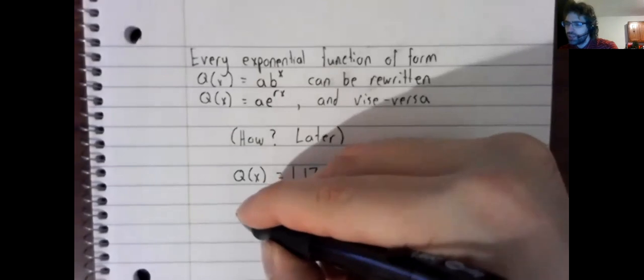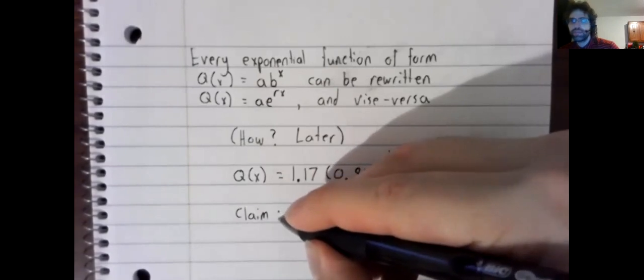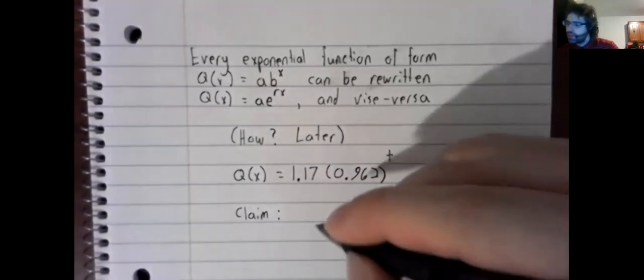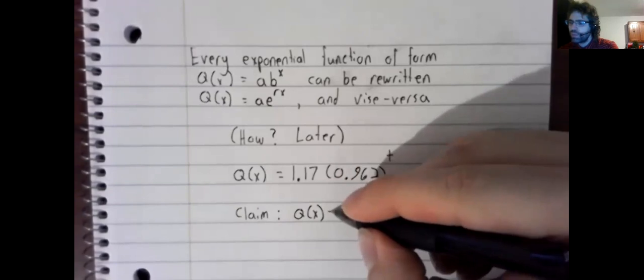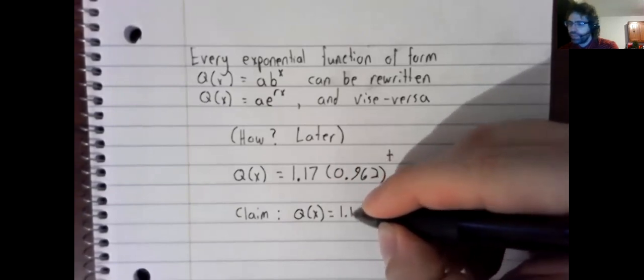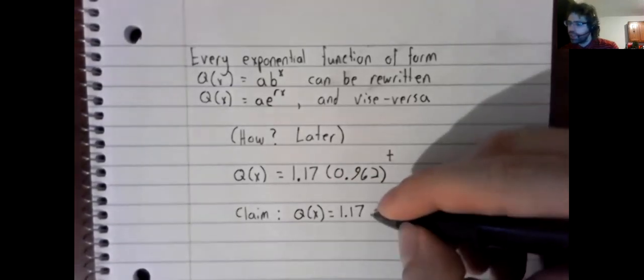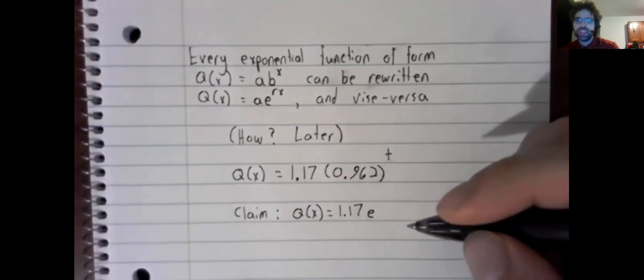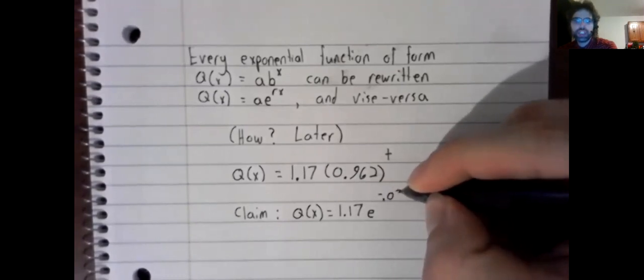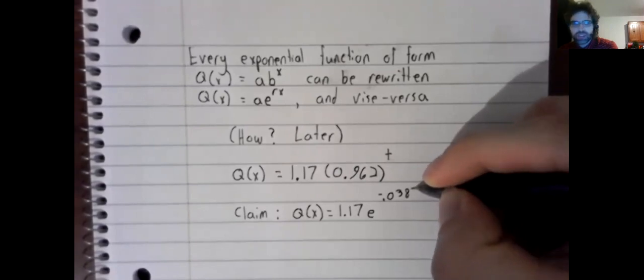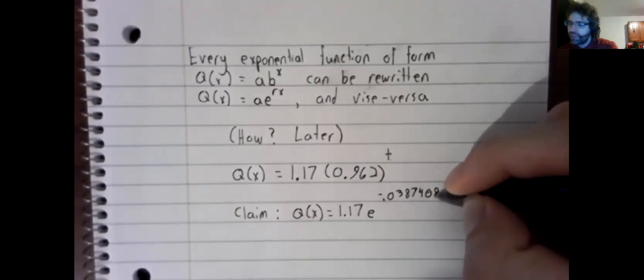It is my contention that q(x) can be rewritten as 1.17 times e to the negative 0.03874080.